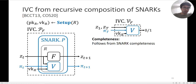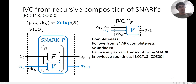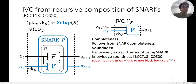Completeness follows directly from SNARK completeness — the statement will just be true. For soundness, you use the proof-of-knowledge property of the SNARK to recursively extract from the IVC prover, going back in time by repeatedly applying the proof-of-knowledge property. Note that this construction, and in particular its soundness, does not hold in the random oracle model because we are using the verifier in a non-black-box way.